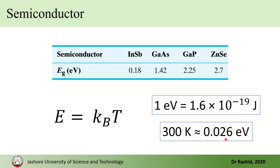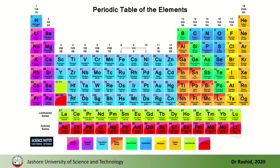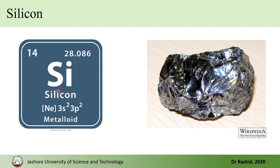If we take 27°C, that is 300 K, that corresponds to approximately 26 milli-electron volts. Now if we look at the periodic table, this region — silicon, germanium, arsenic — these are semi-metals that mostly exhibit semiconducting behavior. Silicon has atomic number 14, and as you can see it is a shiny material, but it is not a metal; it is a semiconductor.